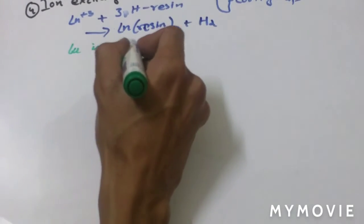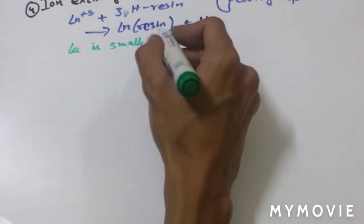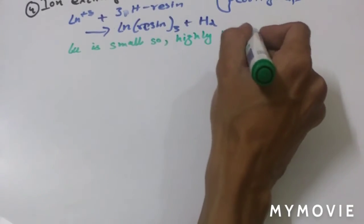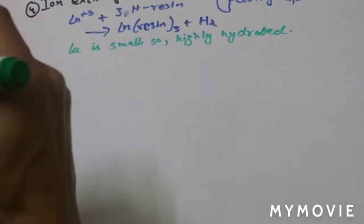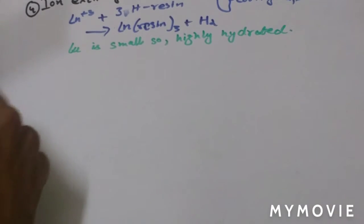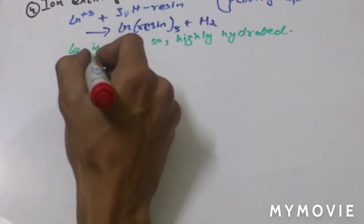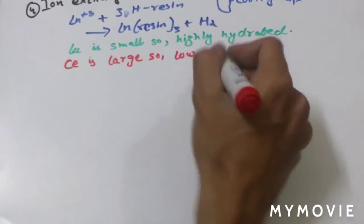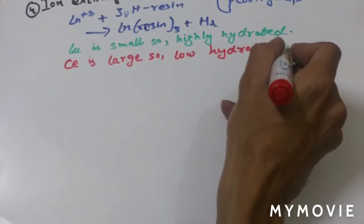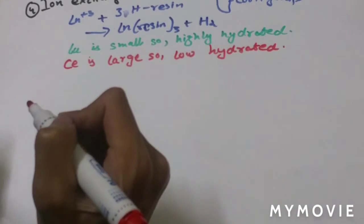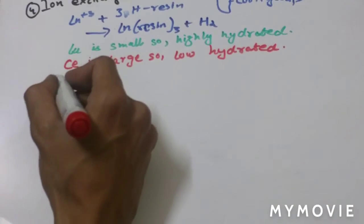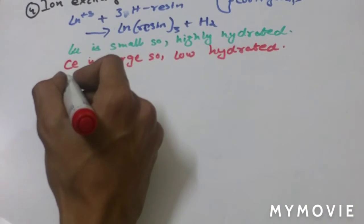Because lutetium is small, it is highly hydrated. Cerium is large in size compared to lutetium, so it is less hydrated. Therefore, hydrated lutetium is bigger in size than hydrated cerium.